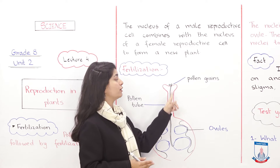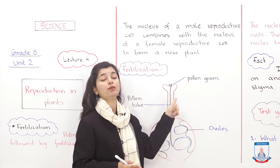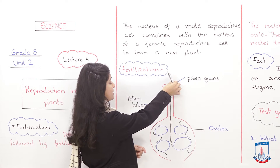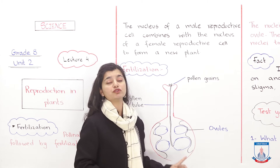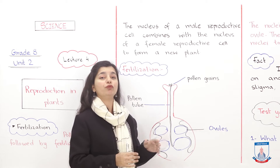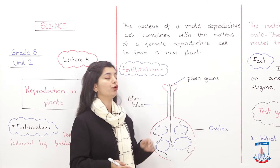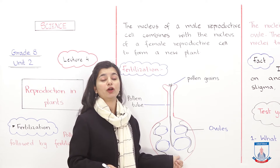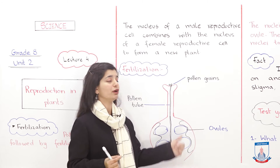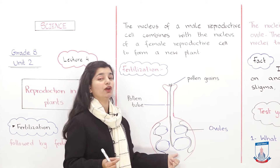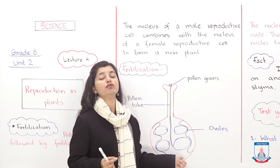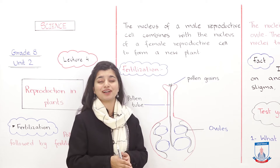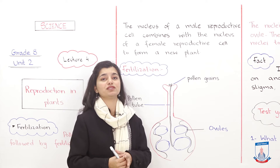The pollen grain starts growing a pollen tube. You can see here — this tube which grows from the pollen grain we call the pollen tube. The tube grows from the pollen grain and travels down the style. When it reaches the ovules, it fuses with the ovules. This is the whole process of fertilization.